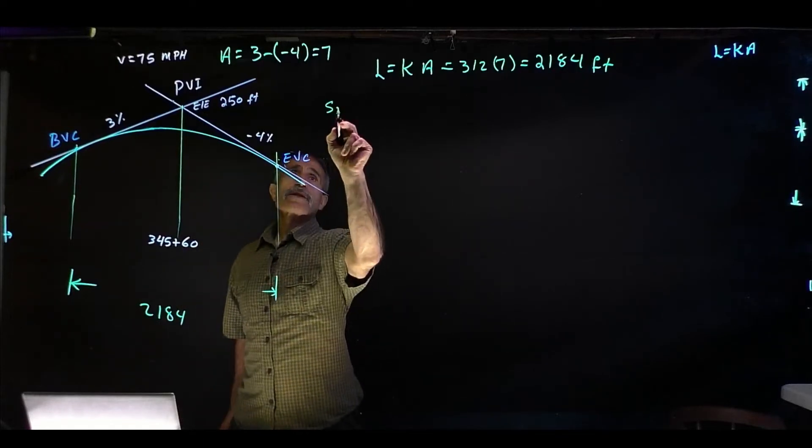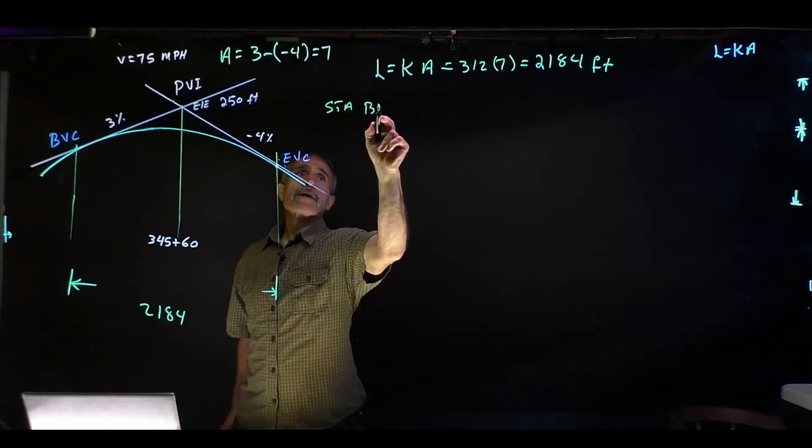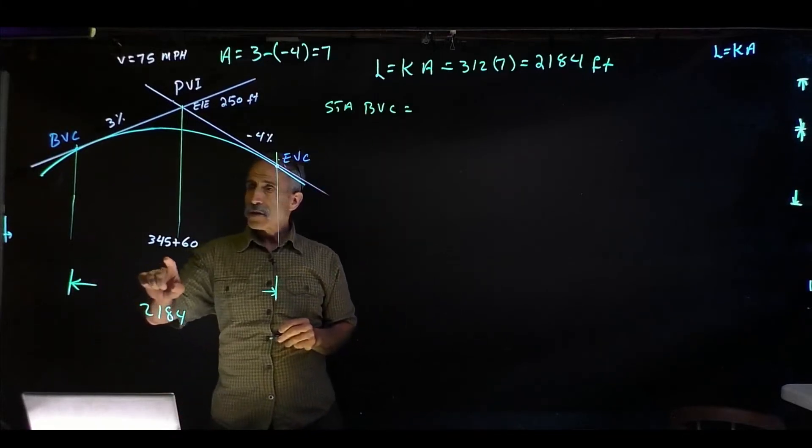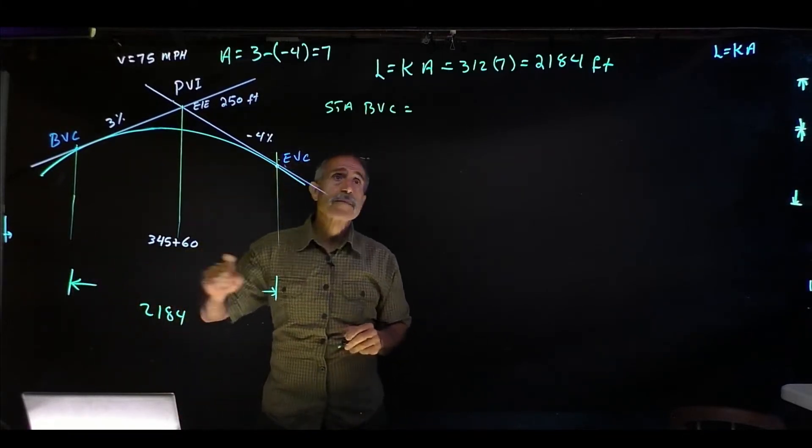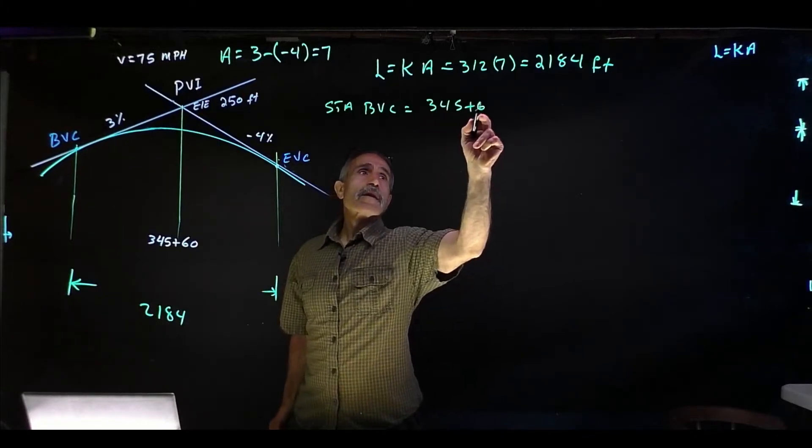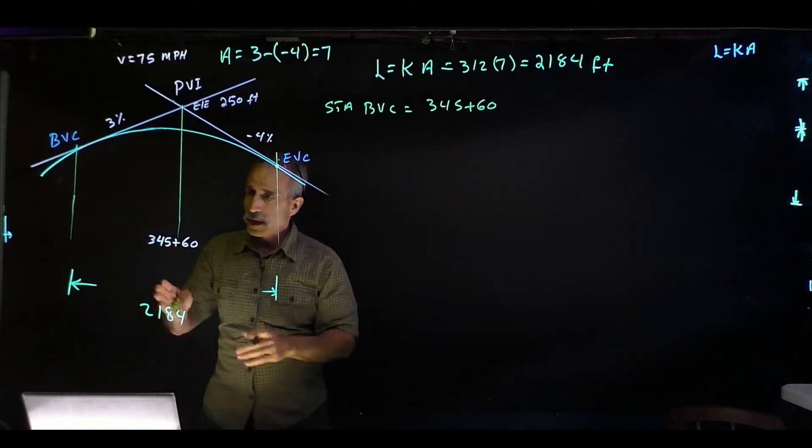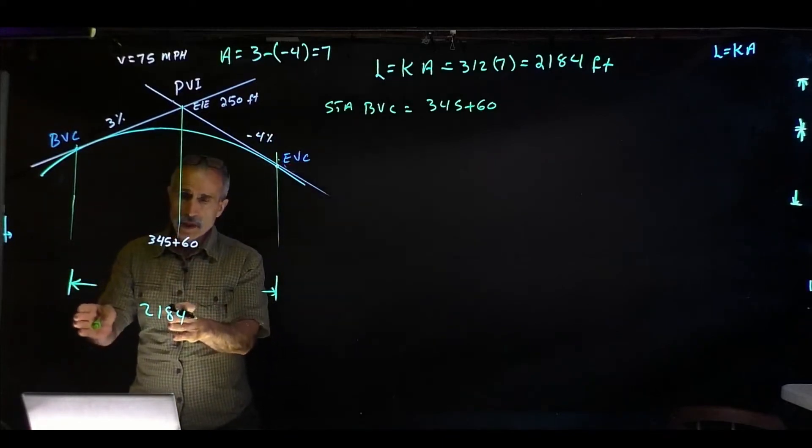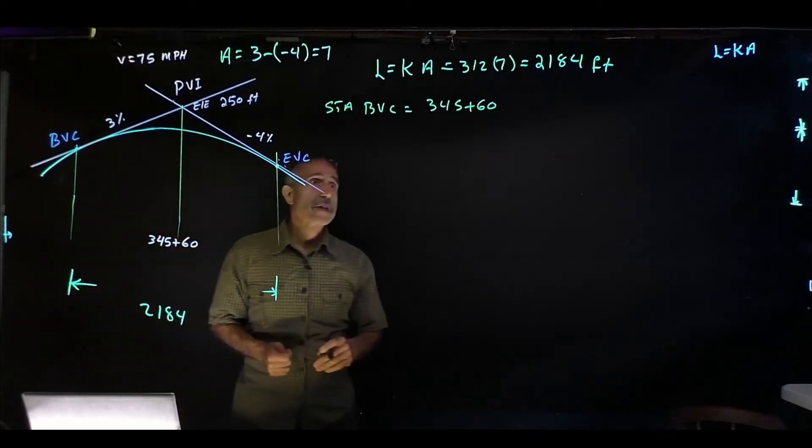First thing I want to find out is what the station of BVC is. Station beginning of the curve equals, if this is 345+60, that means I have to come back half of this, which would be 2184 minus that much.